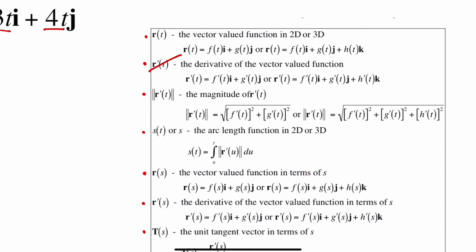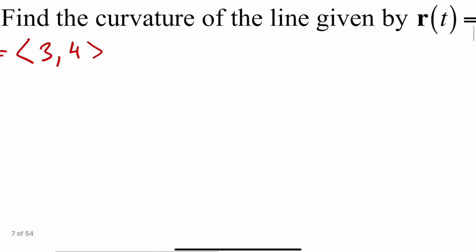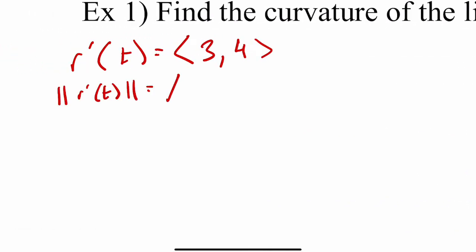Next, I need to find the magnitude of r'(t). So that's going to be the square root of 3 squared plus 4 squared. 3 squared is 9. 4 squared is 16.